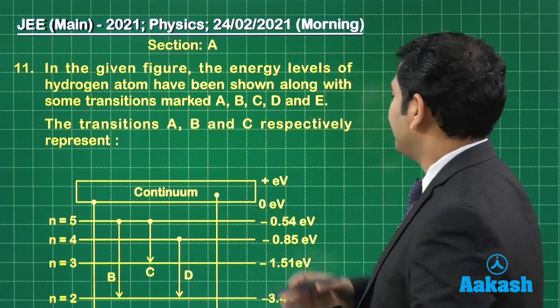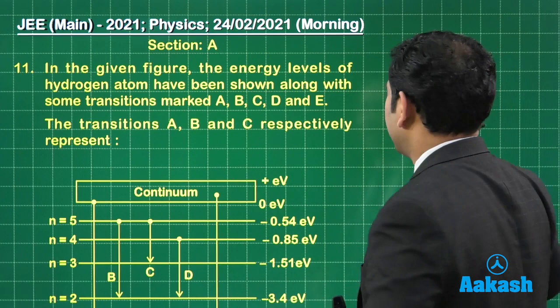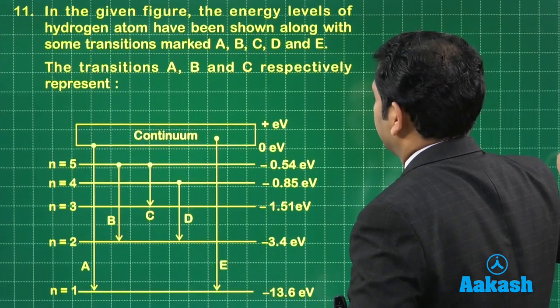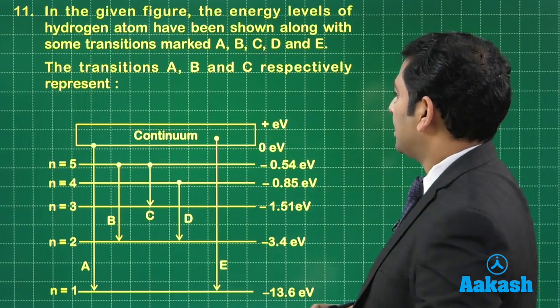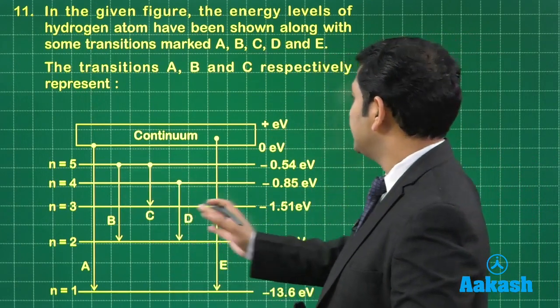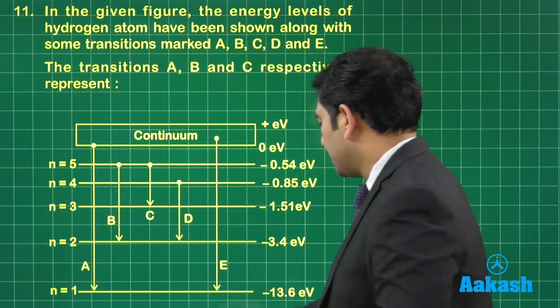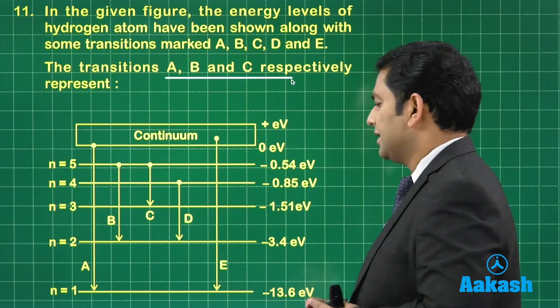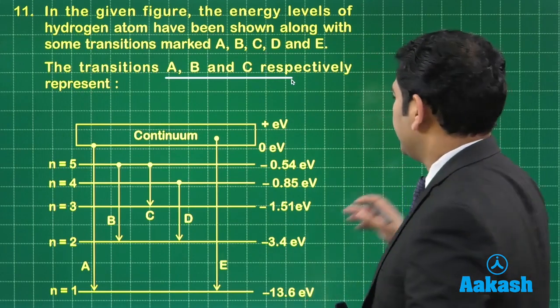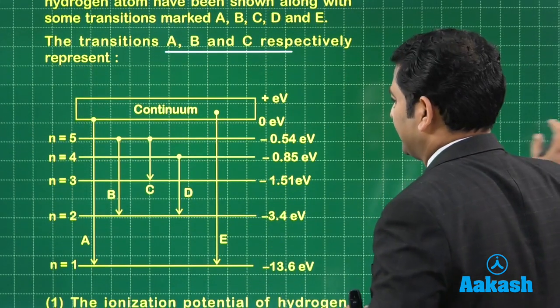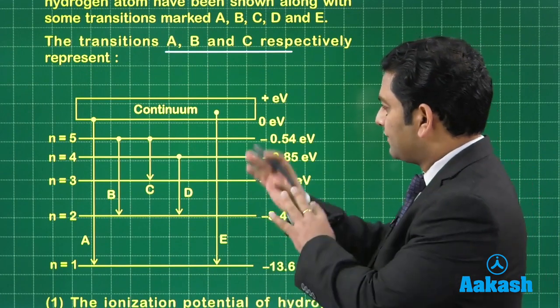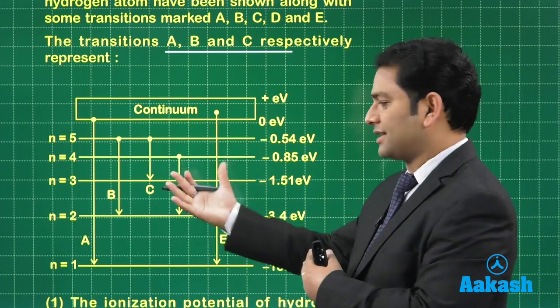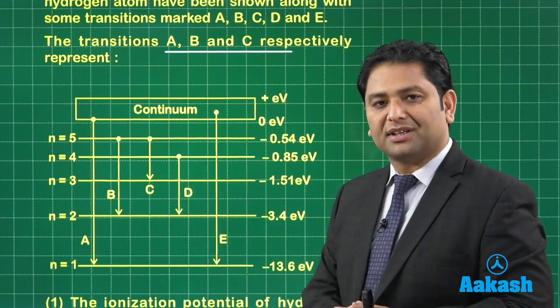In the given figure, the energy levels of hydrogen atom have been shown. So let me show it to you completely. And along with some transition marked as A, B, C, D, and E. Now, we got to comment on the transition A, B, and C respectively. Now, if you see what is A, let's just try to see. All right, before, let's just have a scan of the option so that we can customize our discussion based on the option.